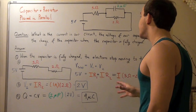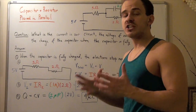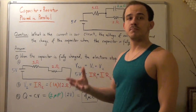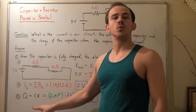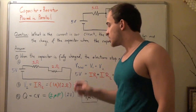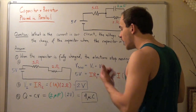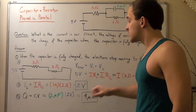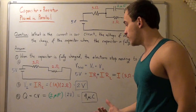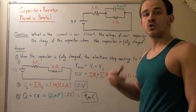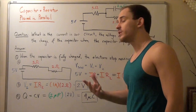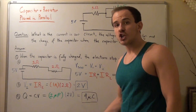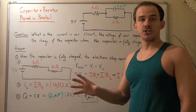Now finally we want to find the charge stored on our capacitor. To find the charge, we use the formula Q equals C times V. We plug in our voltage of 2 volts and our capacitance of 2 microfarads. So 2 microfarads times 2 volts gives us 4 microcoulombs, or simply 4 times 10 to the negative 6 coulombs. That is our charge when our capacitor is fully charged.